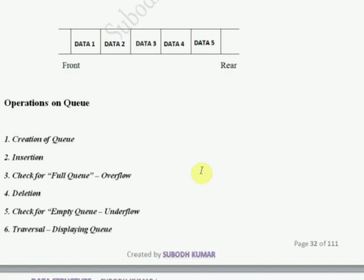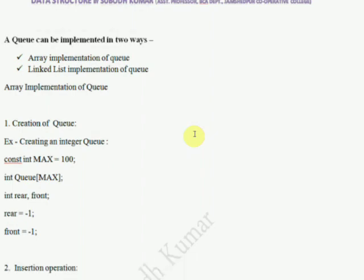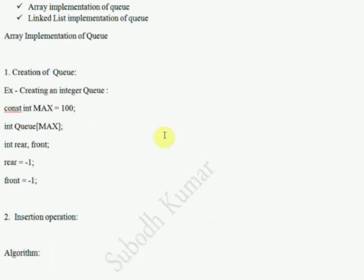A Queue can be implemented in two ways: using an array and using a linked list. In this lesson we are going to learn the array implementation of Queue. To create a Queue, we first declare the maximum size, then declare the queue of that max size, and we require two pointers — rear and front — both initialized to minus one or zero.